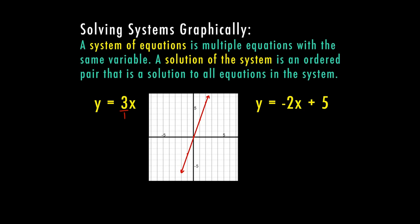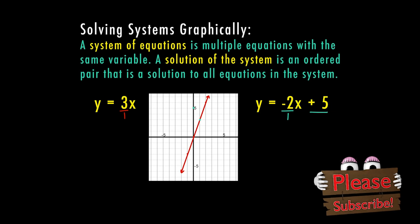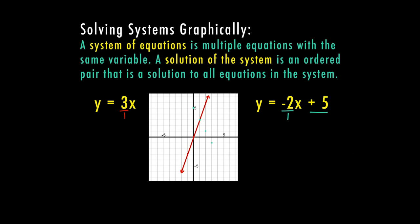Now I'm going to create my line from the second equation: y equals negative 2x plus 5. I see that I have a y-intercept of positive 5, so I'm going to put my first point at (0, 5). From there, my slope is negative 2, so that's negative 2 over 1. I'm going to count down 2, right 1 — down 2, right 1 — down 2, right 1. I like to put a good 3 or 4 points in order to draw a straight line.